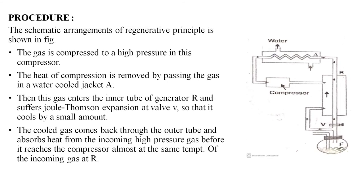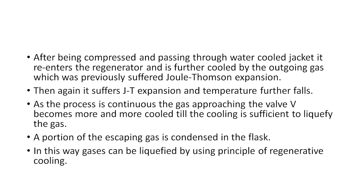The schematic arrangement of the regenerative principle is shown in the figure. The gas is compressed to a high pressure in the compressor; during compression it heats up. The heat of compression is removed by passing the gas through a water-cooled jacket A, where the pipe is surrounded by a water jacket. The gas then enters the inner tube of regenerator R and undergoes Joule-Thomson expansion at valve V, cooling by a small amount. The cooled gas returns through the outer tube, absorbing heat from the incoming high-pressure gas before reaching the compressor at nearly the same temperature. After being compressed and passing through the water-cooled jacket again, it re-enters the regenerator and is further cooled by the outgoing gas that previously underwent Joule-Thomson expansion.